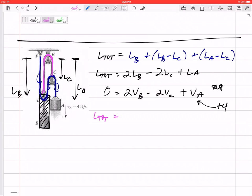L total of that pink rope would be just LB plus LC. That one was easy enough. Take the derivative, so VB plus VC. So now I've got this equation, I've got this equation.